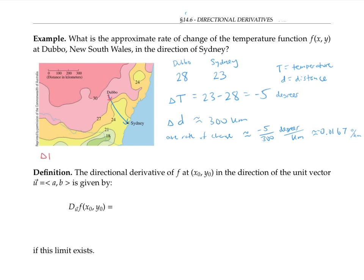If I calculate the change in temperature using the red arrow, that's going to be about 27 minus 28, or about negative one degree. And the corresponding distance ΔD is going to be about 50 kilometers based on the scale. So then our ΔT/ΔD will be about negative one over 50, or about negative 0.02 degrees per kilometer. Since we only have limited information about the temperature function given by a few different contour lines, that's probably about as accurate as we could get.